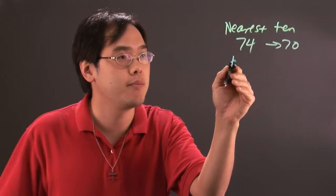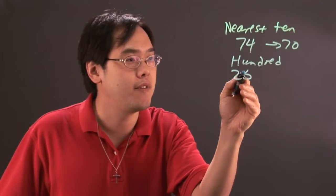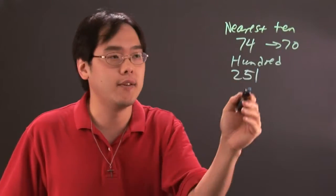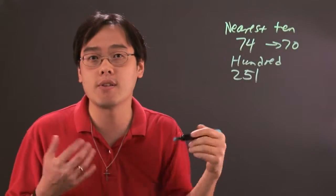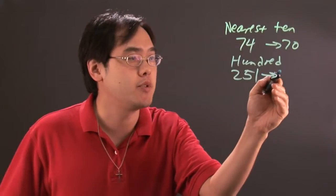If it was nearest hundred, where if you have 251, again if it's 50 or more you round to the nearest hundred. If it's below 50, round down. This rounds up to 300.